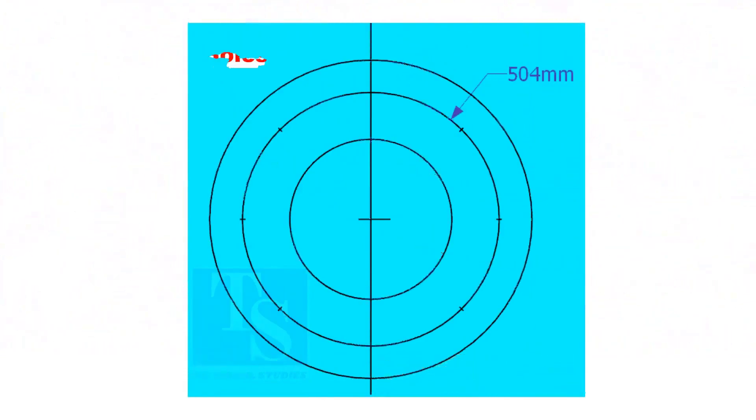Since the number of the holes is 8, divide the PCD into 8 equal parts. To divide the circle easily and accurately, let us find the cord length of the holes.